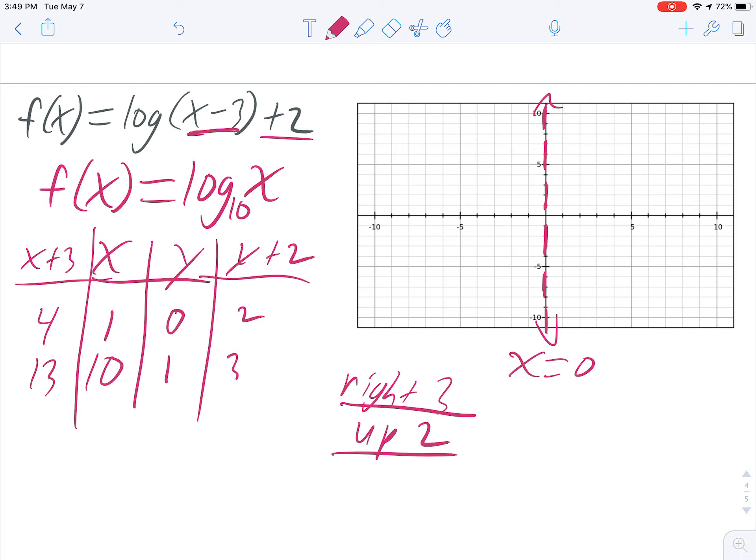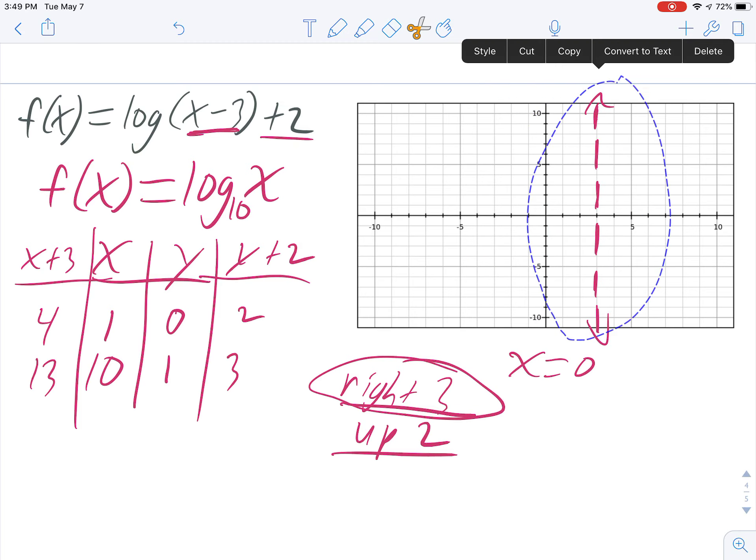Now thinking about the asymptote, the vertical asymptote, if I'm moving right 3, then my asymptote is going to go to x equals 3. So my new asymptote is x equals 3.